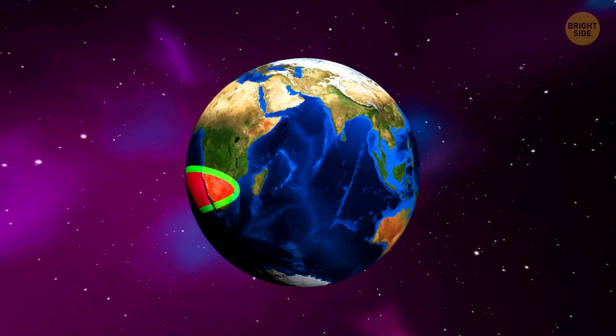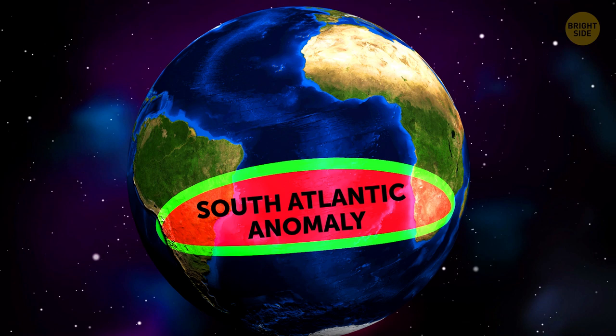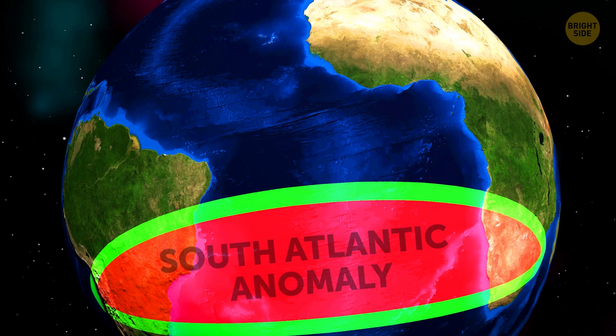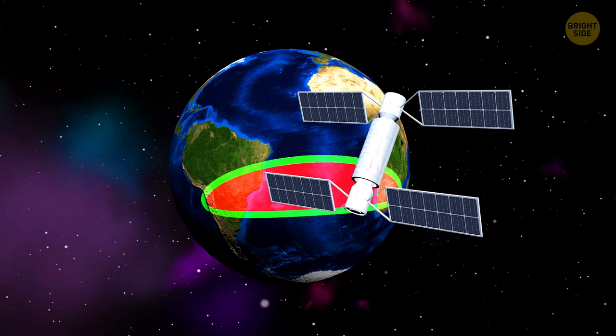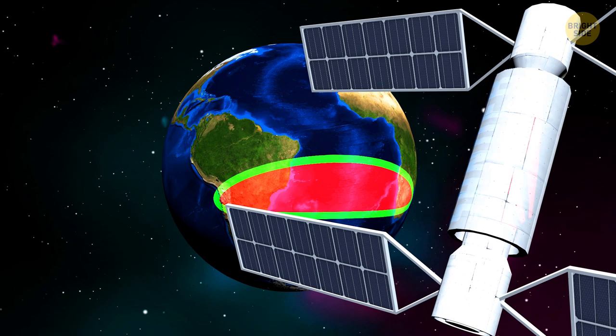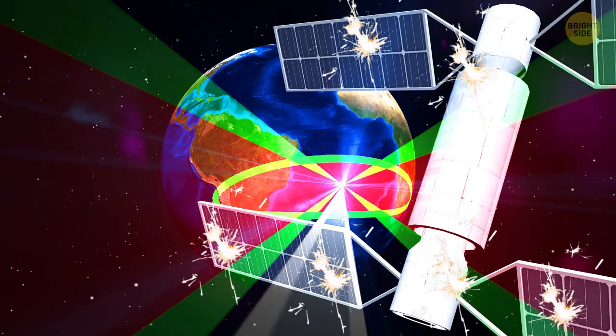Nowadays, the region that worries scientists the most is the South Atlantic Anomaly, a vast region stretching from Zimbabwe to Chile. The magnetic field in this area is so weak that it's dangerous for satellites to enter it. As you remember, the magnetosphere protects Earth from radiation. Thus, a weak magnetic field means additional hazardous radiation, which in turn can lead to disruption in satellites' electronics.